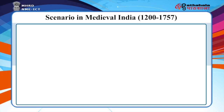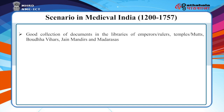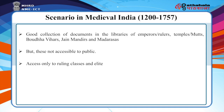During the medieval period, some of the emperors, rulers, temples, Buddha Bihars, Jain temples, and Madarsas were said to have libraries. These libraries were not open to the general public. Only members of the ruling class, educationists, and a select few were allowed to use them.